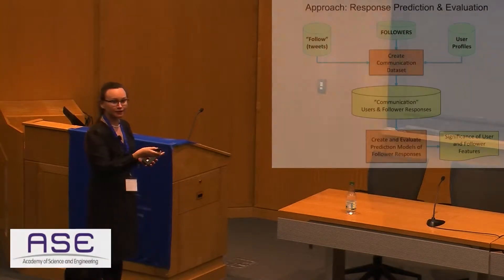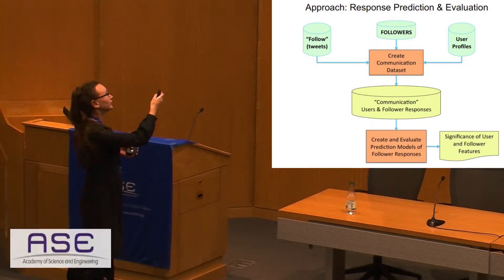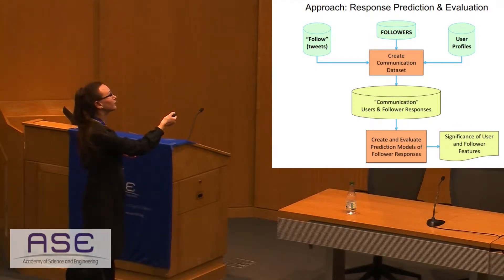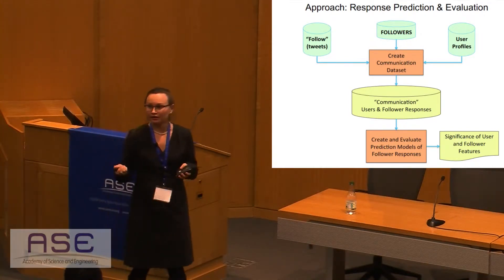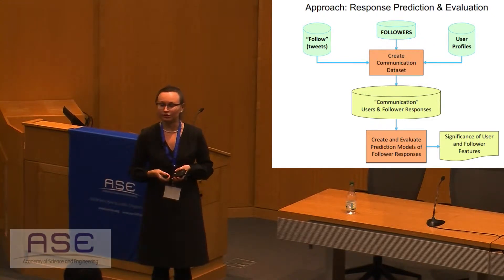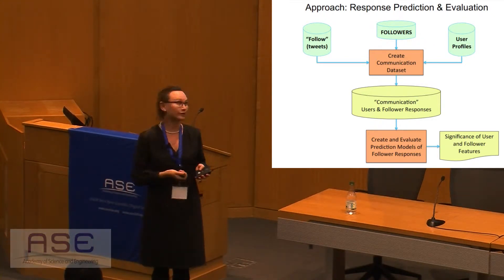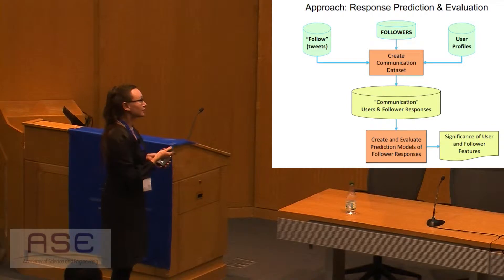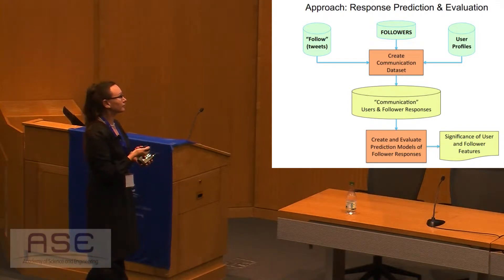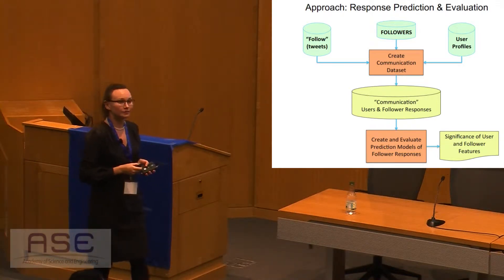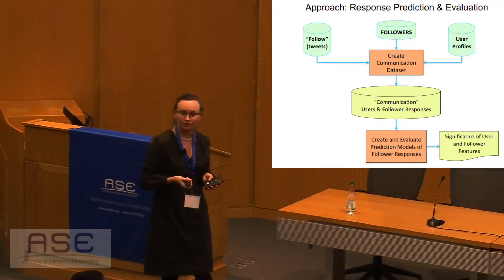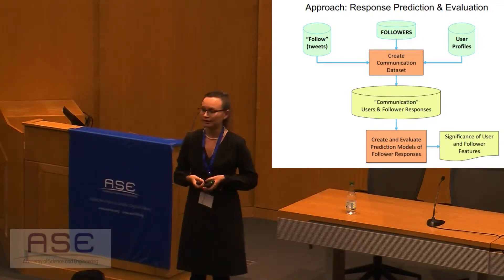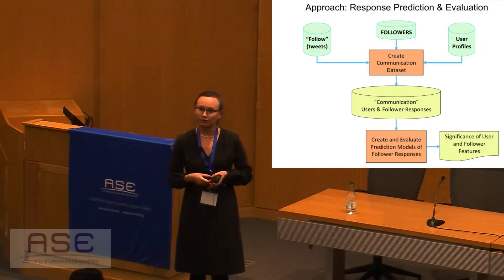On the second stage, we have data from the followers — the tweets of the followers, follows information, and user-related profiles. We want to see what is important for getting user responses on Twitter. For this, we build a model based on logistic regression and also decision trees. With the help of these models, we find out the most important features.